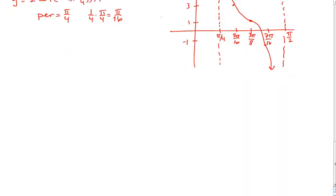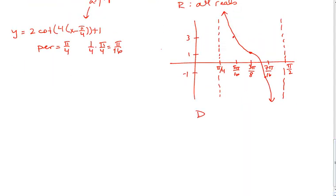Then we can figure out the domain and the range. The range is easy—it's all real numbers. And then the domain would be x can't equal pi over 4 plus, from pi over 4 to pi over 2 is pi over 4, so the asymptotes repeat every pi over 4 units.